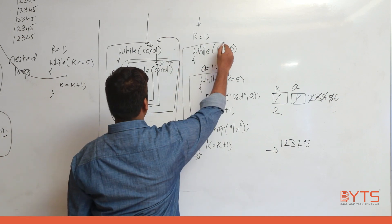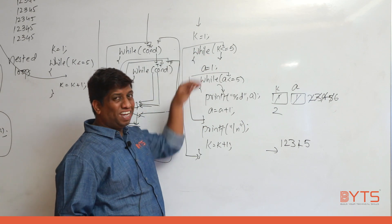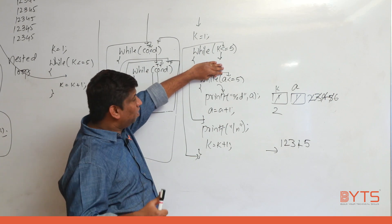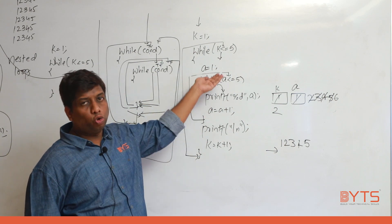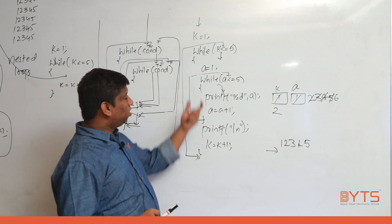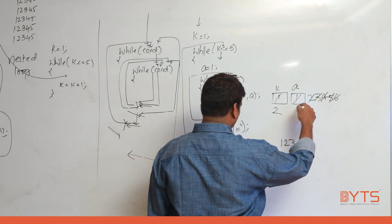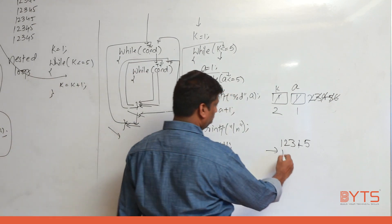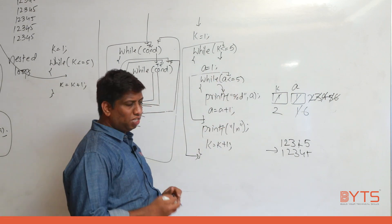We return to outer loop condition: 2 <= 5, true — come inside. Now if a were still 6, then 6 <= 5 would be false and the inner loop wouldn't execute. That's why we reinitialized a = 1. With a = 1 again: 1 <= 5, prints 1, 2, 3, 4, 5, then a = 6, 6 <= 5 is false. So the inner loop runs correctly for each outer iteration.